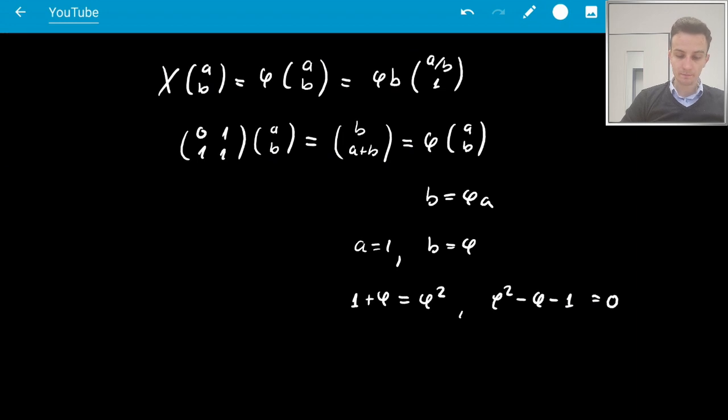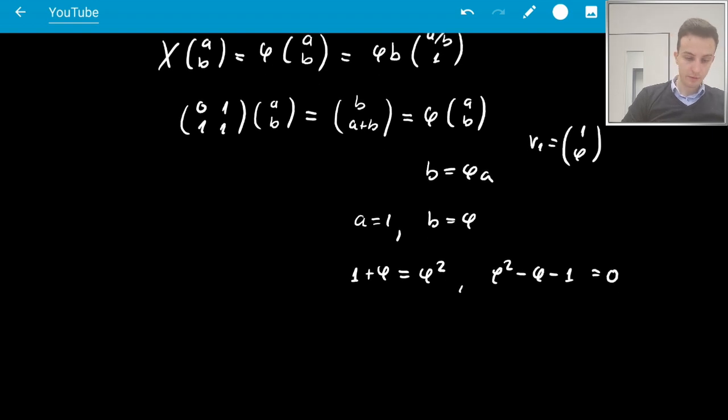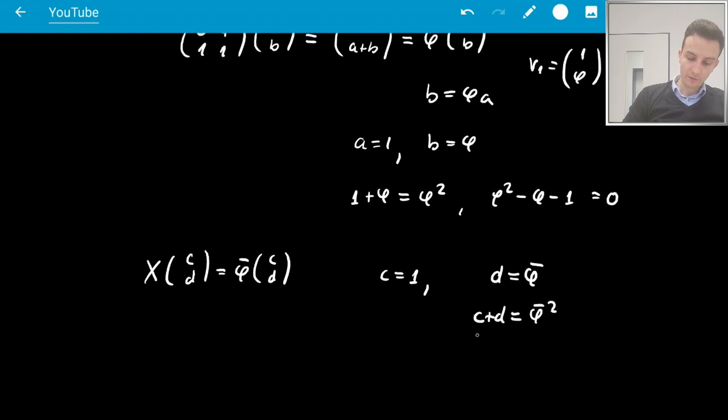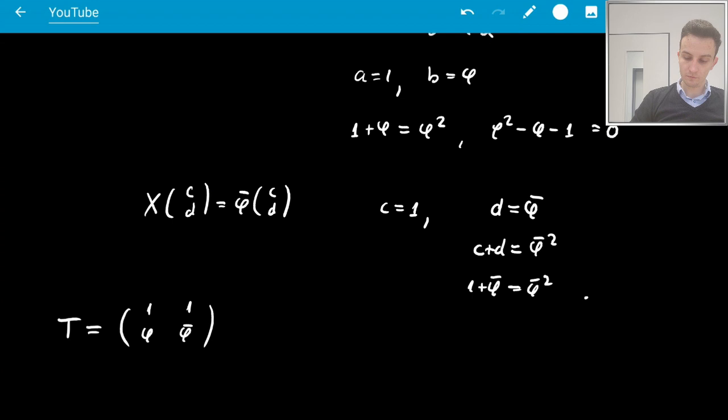And so one of our eigenvectors is 1, phi. And the other one is going to be the same, just 1, phi bar probably. Well, let's verify, so let's say cd should be phi bar cd. So again, I'll choose c equals 1, which will mean that d equals phi bar and c plus d equals phi bar squared. This is 1 plus phi bar equals phi bar squared. Yep, it's all good. Okay, so that means that T will be the matrix 1, phi, 1, phi bar. Okay.